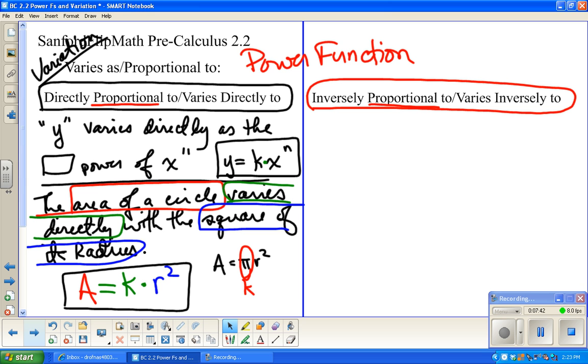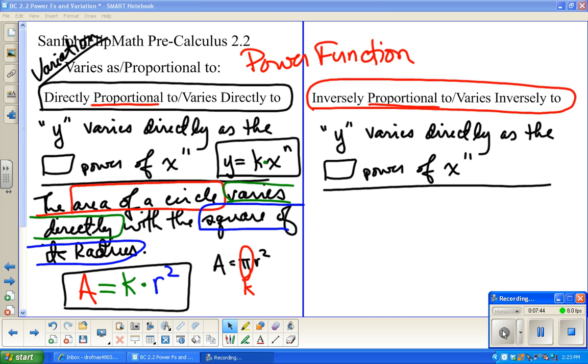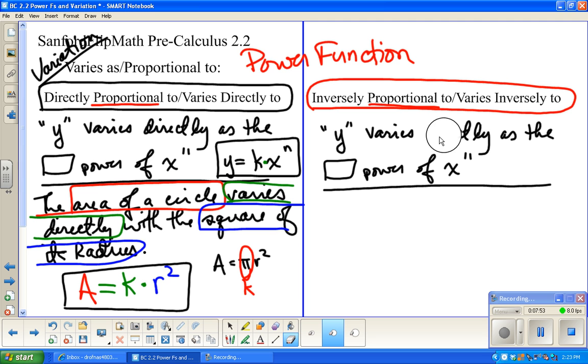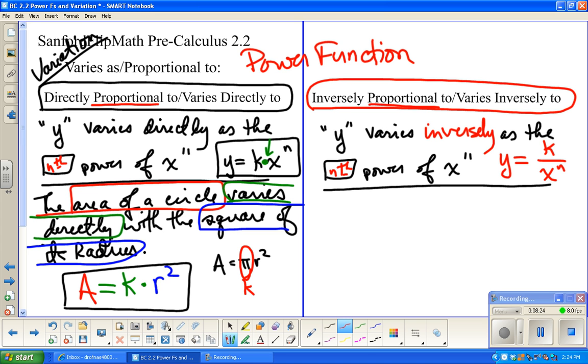Now, similarly, the only difference between, that was magic, wasn't it, between varies directly and varies inversely. Well, in the wording is that word. And where the direct variation was connected by multiplication, well, inverse variation is connected by the inverse of multiplication, division. So this is going to be y equals k over x to the n.